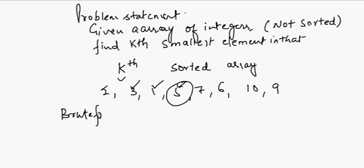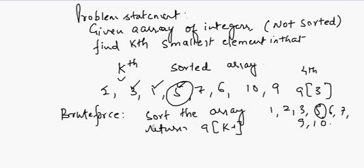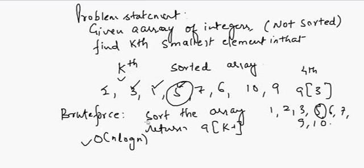The brute force solution is to sort the array and return the element at index k-1. So if I want the fourth smallest element, I return a[3], which gives 5. The complexity of this algorithm is O(n log n) using merge sort with extra space, or QuickSort with good pivot selection. Now the question is: can we do it without sorting the entire array?